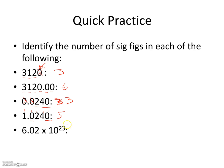For numbers in scientific notation, the "times 10 to the power" part just represents moved decimal places — zeros that aren't really there. We only look at the number preceding that. For example, 6.02 × 10²³: the 6 and 2 count, and the zero between them is between two nonzero digits, so it also counts. That gives three significant figures.